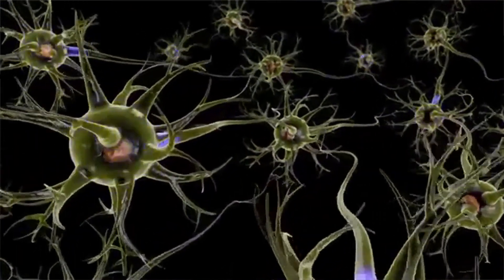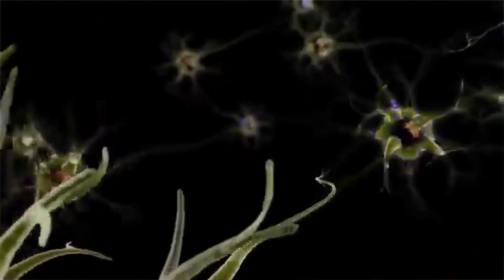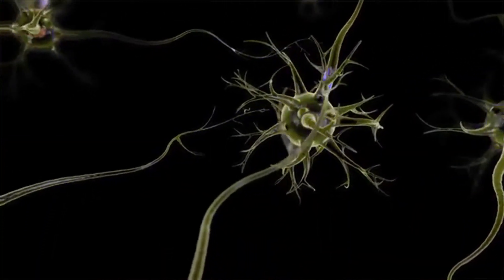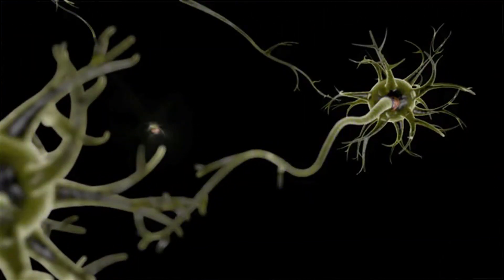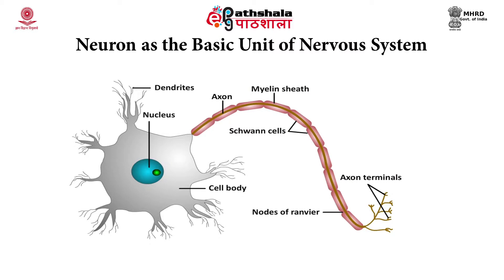The whole nervous system is made up of several kinds of cells, namely the neurons, the glial cells, and the stem cells. The neurons in the nervous system are cells much larger than most cells in the body. They are complex structures which have a head portion called the soma and a tail portion called the axon. The axon ends in the terminal knobs.